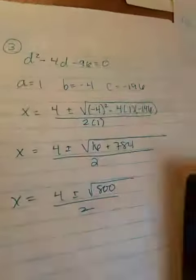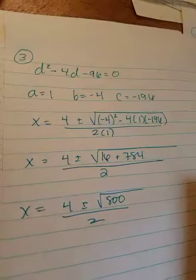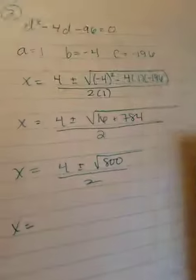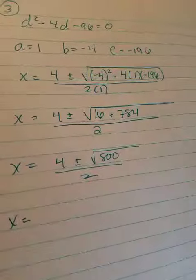16 plus 784 is 800. So is 800 a perfect square? You tell me. The answer is no. But what perfect square goes into 800 that you could think of?